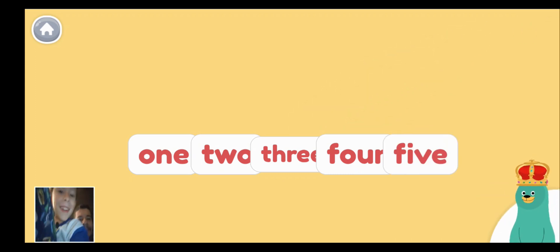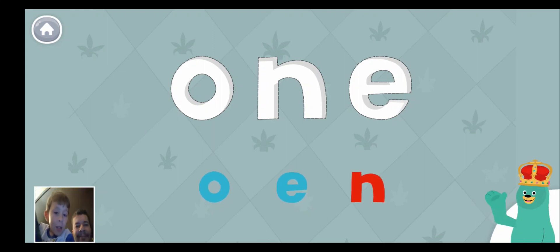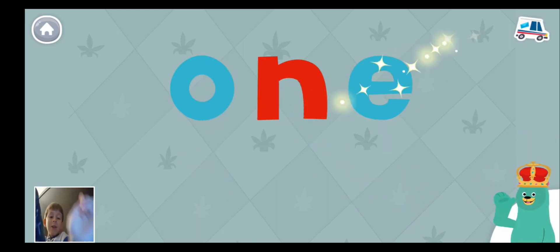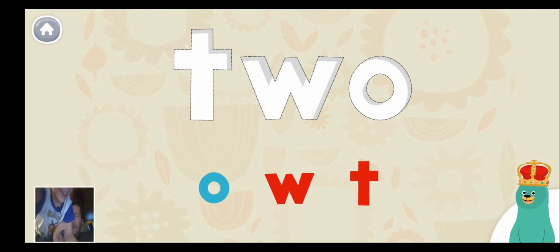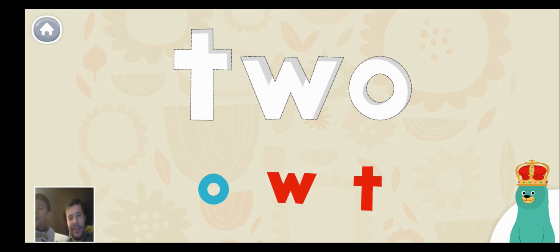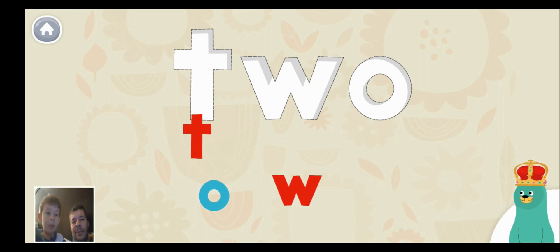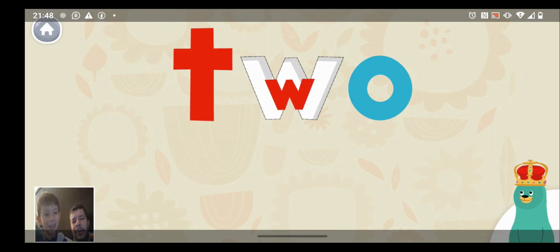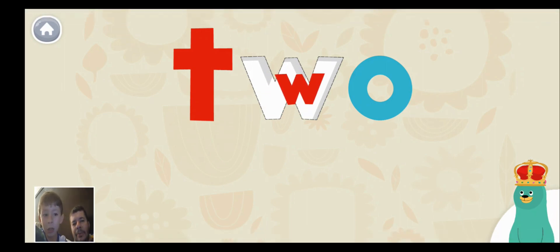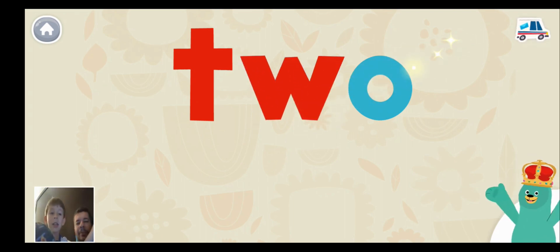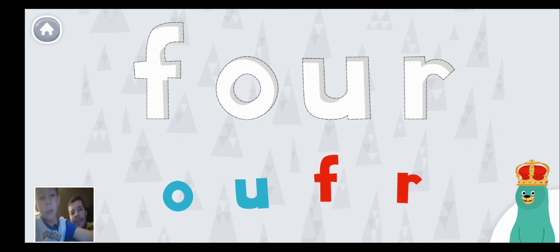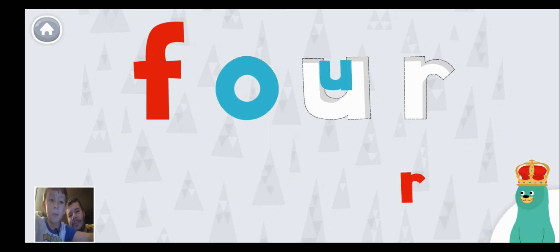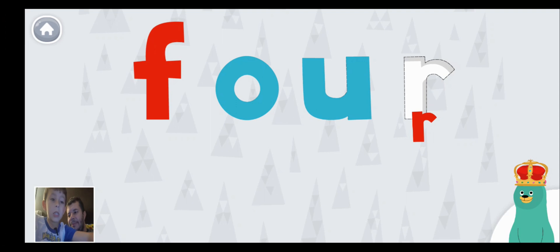Now let's spell the words for the numbers. Drag the letters to spell 1. N, E, N, O. You spelled the word 1. Drag the letters to spell the word 2. T, O, W. You spelled the word 2. Drag the letters to spell the word 4. O, U, R. You spelled the word 4.